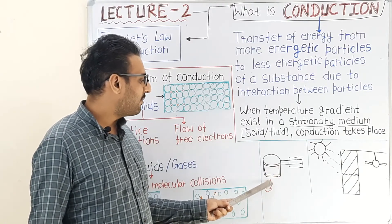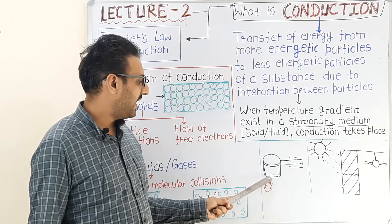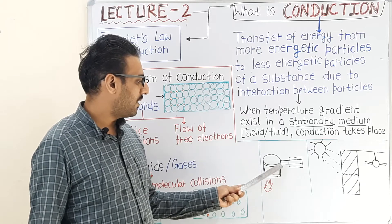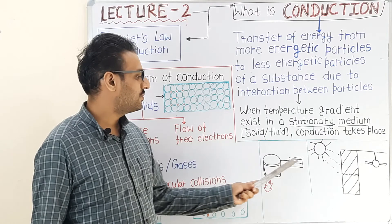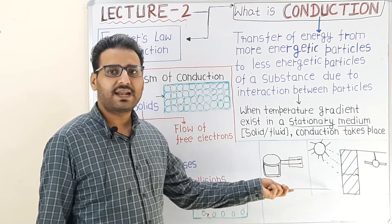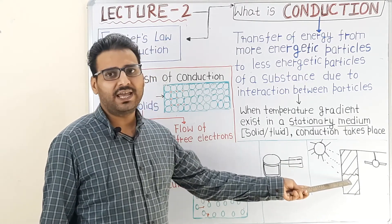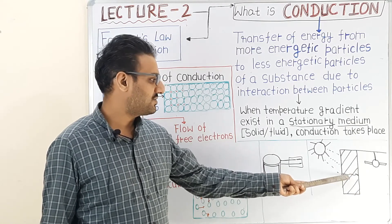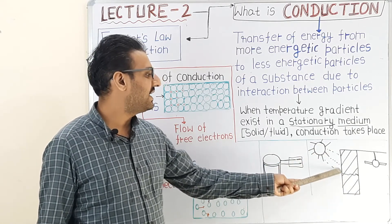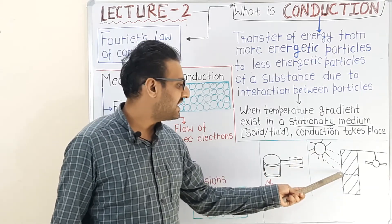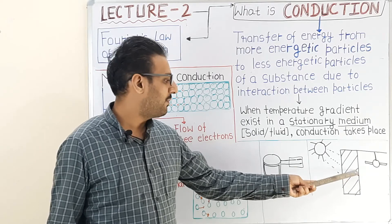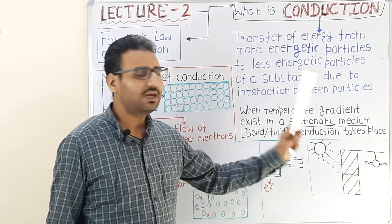Examples of conduction in daily life: First, a pan — the bottom is heated by fire and heat is conducted from the bottom to the top surface and then to the handle. Second, the wall of a building or industry — the outer face is heated by solar radiation and heat is conducted from the outer surface to the inner surface, and from the inner surface to the room air.